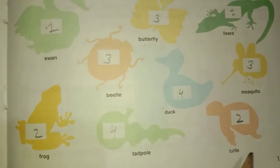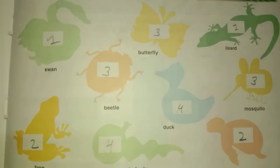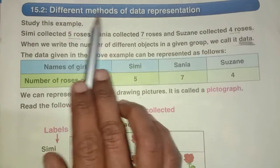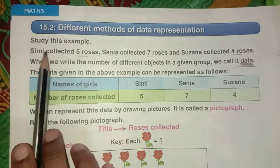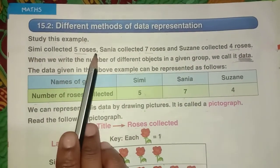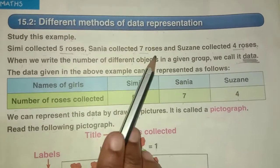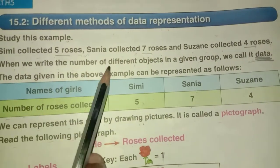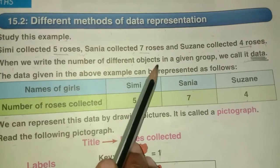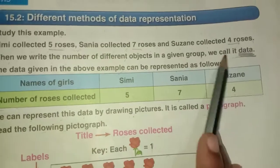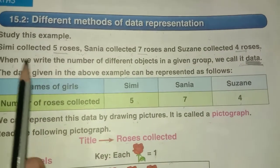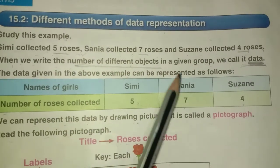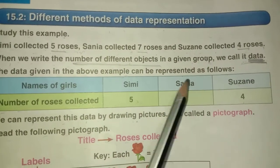Different methods of data representation. Simi collected five roses, Sanya collected seven roses, and Suzanne collected four roses. When we write the number of different objects in a given group, we call it data.